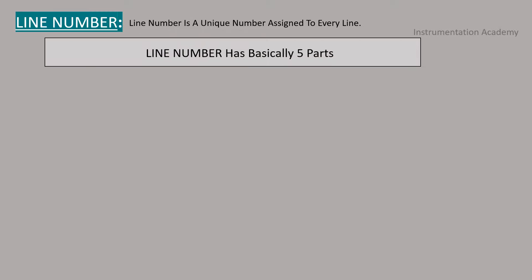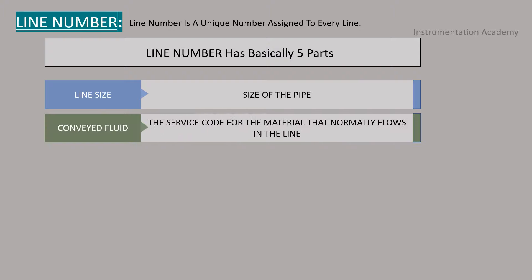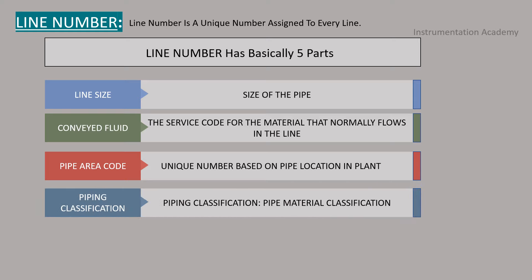Line number. Every pipe on a P&ID requires a unique number so that it can be uniquely identified during design or referenced in operating procedures. Line number is a unique number assigned to every line. Line number has basically five parts. First part is line size. It represents the size of the pipe. Second part is conveyed fluid. This is a service code for material that normally flows in the line. The third part is pipe area code. It is a unique number based on the pipe location in a plant. Fourth part is pipe material classification and the fifth one is insulation code and thickness.